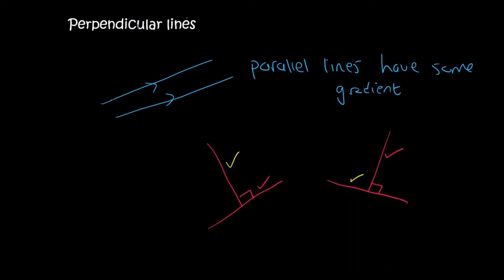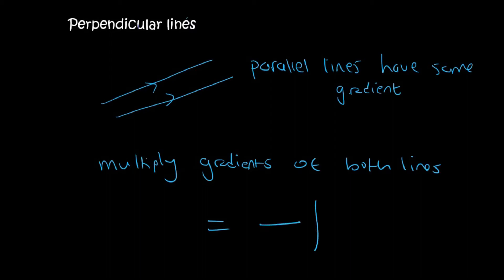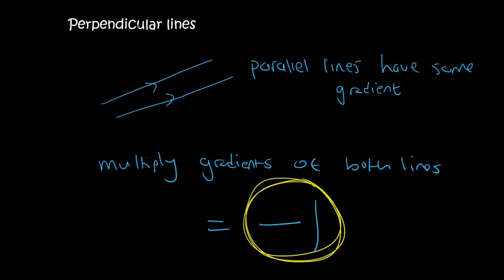For perpendicular lines, if you multiply the gradients of both lines, the answer is minus 1. That's a special number you must remember. When you multiply the gradients of perpendicular lines, you will get minus 1.